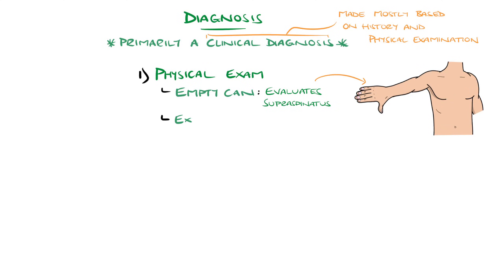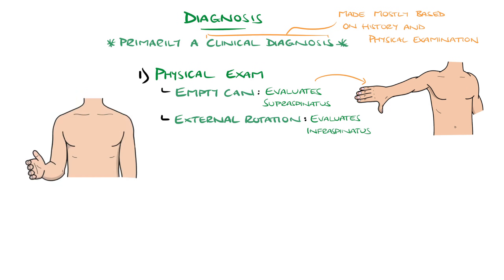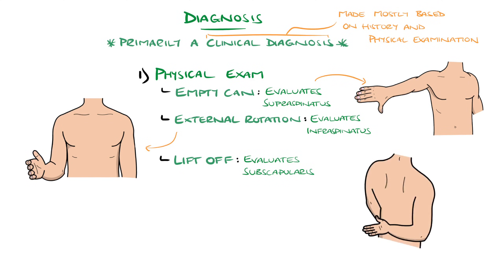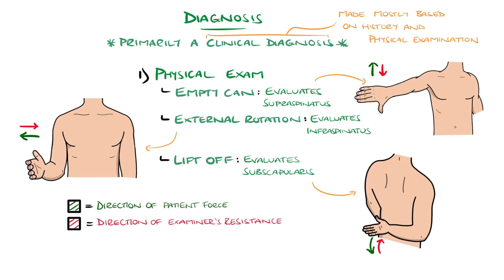External rotation is another test, with the elbows held to the side and forearms out in front at 90 degrees. The patient externally rotates while the examiner resists. This tests the infraspinatus. The lift-off test features the patient placing the back of their hand on their lower back and then attempting to lift the hand off the lower back as resistance is applied. This tests the subscapularis.